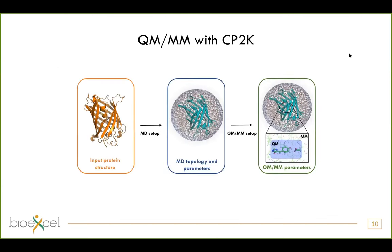The second major addition, which has been in the works for several years, is a new interface for quantum mechanics/molecular mechanics (QM/MM) hybrid simulation with the CP2K package. We've worked with collaborators in Finland at the University of Jyväskylä to make it possible to do a standard simulation setup: use your protein structure, apply your normal molecular dynamics topology parameters, generate an input, add a description of the QM setup, and then run it in the version of GROMACS coupled to CP2K.